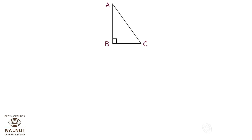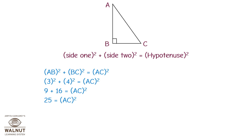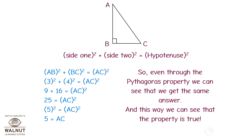Let's check it through the property now. For triangle ABC: side 1 squared plus side 2 squared equals hypotenuse squared. Therefore, AB squared plus BC squared equals AC squared. Therefore, 3 squared plus 4 squared equals AC squared. Therefore, 9 plus 16 equals AC squared. Therefore, 25 equals AC squared. Therefore, 5 squared equals AC squared. Therefore, 5 equals AC. So, even through the Pythagoras property we get the same answer, and this way we can see that the property is true.